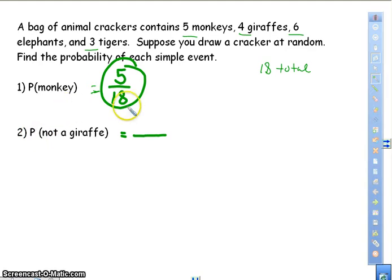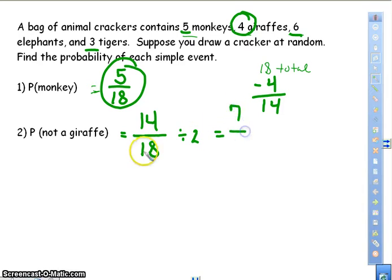So for number two, not a giraffe, once again it's out of eighteen, and you're doing everything but a giraffe. So there's four giraffes. So if I take eighteen minus four, you get fourteen, which means there's fourteen animals that are not giraffes. Another way to do that is to take five plus six plus three, you would also get fourteen. Now we're going to simplify by two. Fourteen divided by two is seven, eighteen divided by two is nine. And my answer is seven ninths.